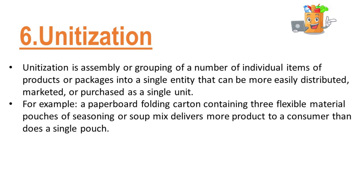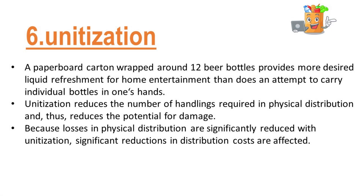The next function is unitization. Unitization is the assembly or grouping of a number of individual items of products or packages into a single entity that can be more easily distributed, marketed, or purchased as a single unit. For example, a paperboard folding carton containing three flexible material pouches of seasoning or soup mix delivers more product to a consumer than does a single pouch. A paperboard carton wrapped around 12 beer bottles provides more desired liquid refreshment for home entertainment than does attempting to carry individual bottles. Unitization reduces the number of handlings required in physical distribution and thus reduces the potential for damage, significantly reducing distribution costs.